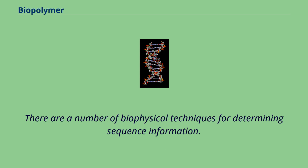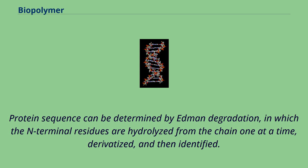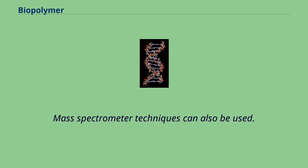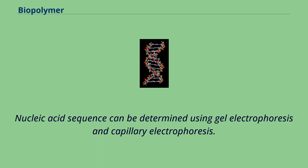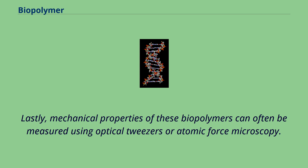There are a number of biophysical techniques for determining sequence information. Protein sequence can be determined by Edman degradation, in which the end terminal residues are hydrolyzed from the chain one at a time, derivatized, and then identified. Mass spectrometry techniques can also be used. Nucleic acid sequence can be determined using gel electrophoresis and capillary electrophoresis. Lastly, mechanical properties of these biopolymers can often be measured using optical tweezers or atomic force microscopy.